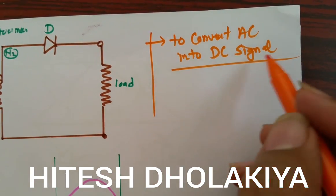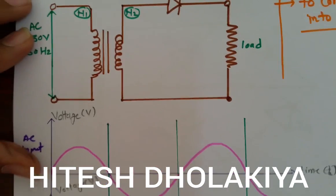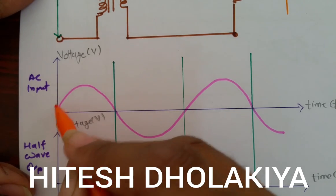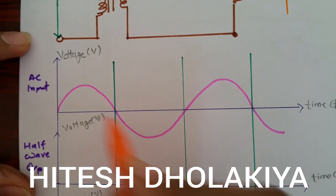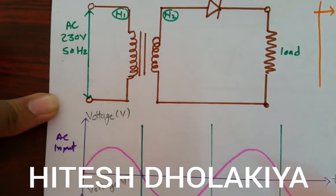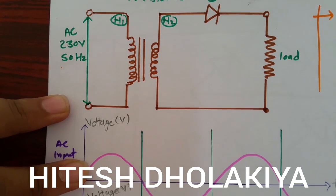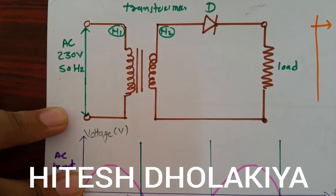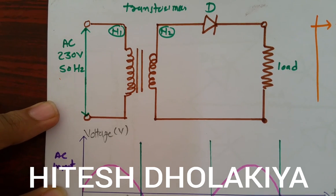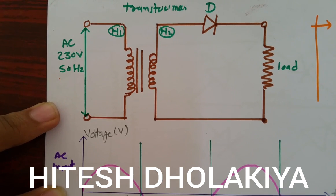Our aim is to convert AC signal into DC signal. Usually the signal coming at our home is an AC signal, and in India that signal's frequency is 50 Hz and the voltage is about 230 volts. There are many applications like mobile battery chargers and other circuits which need constant DC voltage, and that we can achieve by having a rectifier circuit.